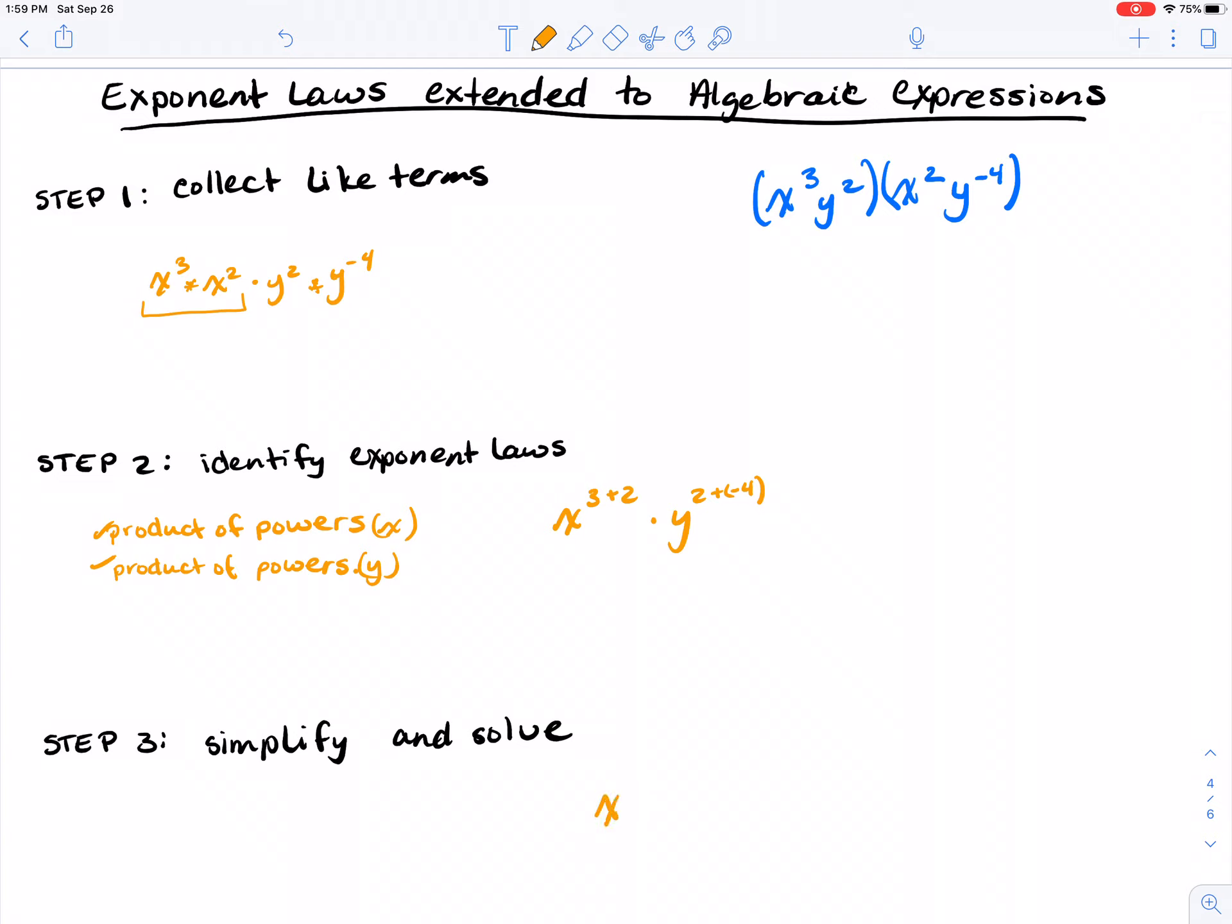x cubed plus 2 is 5, and y to the 2 plus negative 4 is 2 minus 4, which gives negative 2. So my answer to this expression is x to the 5 y to the negative 2.